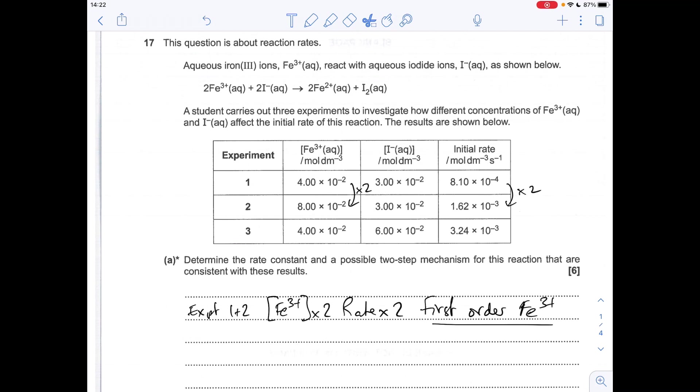And then to get the order with respect to I minus, if we use experiments 1 and 3, you can see the Fe3+ concentration's kept at 4 times 10 to the minus 2. So the I minus concentration has doubled, and the initial rate has actually gone up 4 times, so that's second order for the I minus.